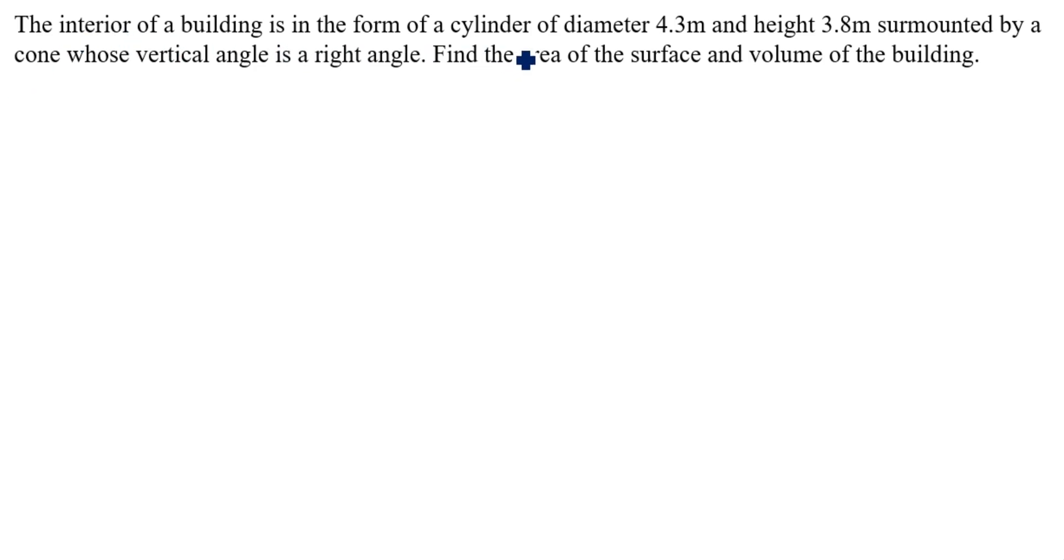The interior of a building is in the form of a cylinder of diameter 4.3 meter and height 3.8 meter. Now we will draw the cylinder drawing, surmounted by a cone. Its vertical angle is a right angle, so vertical angle is a right angle.